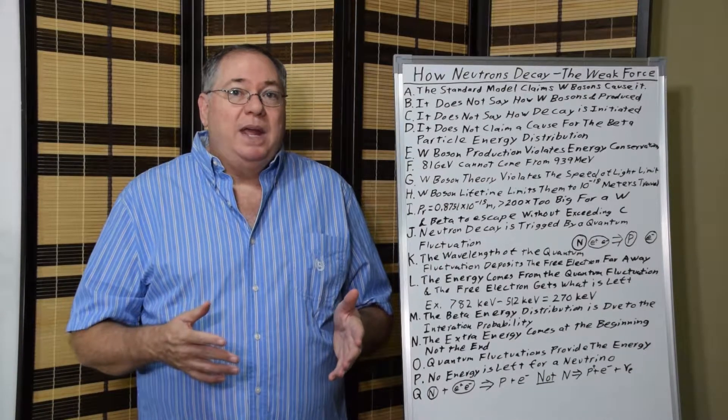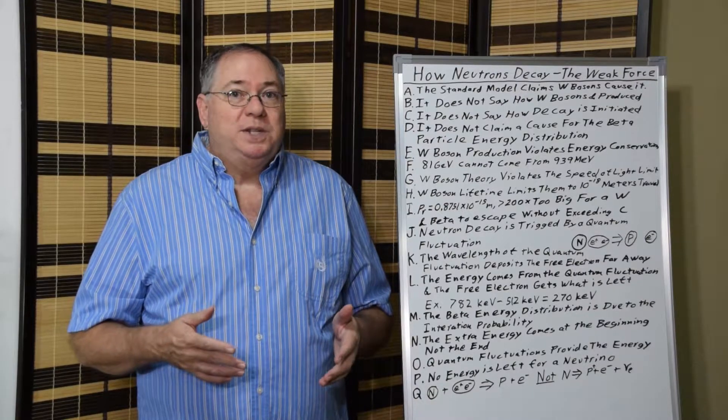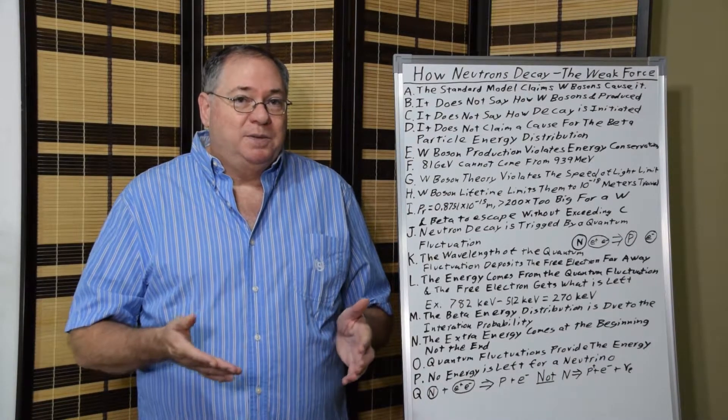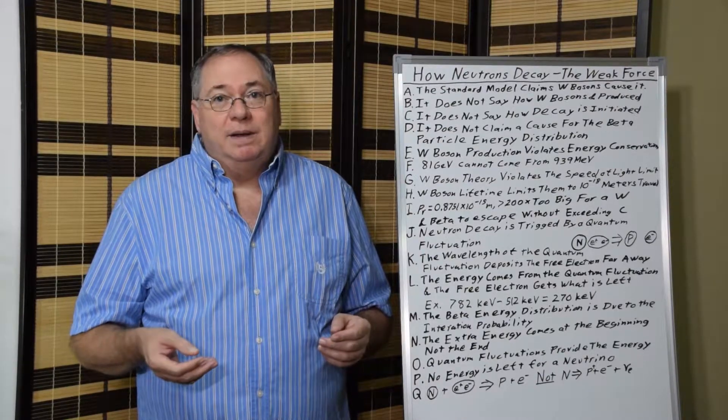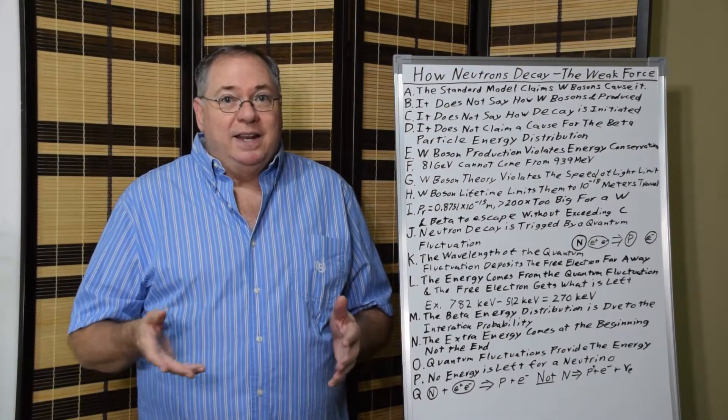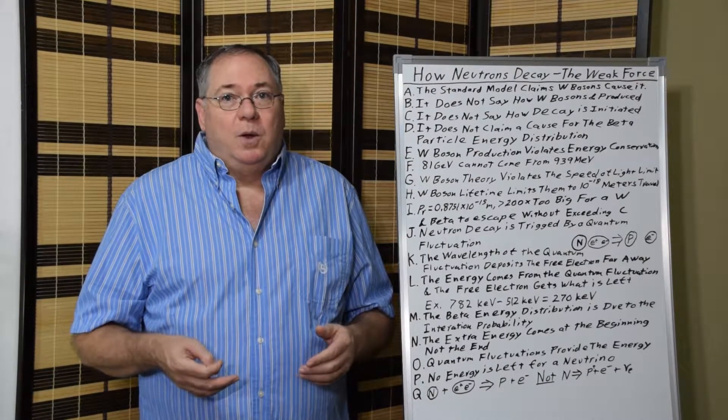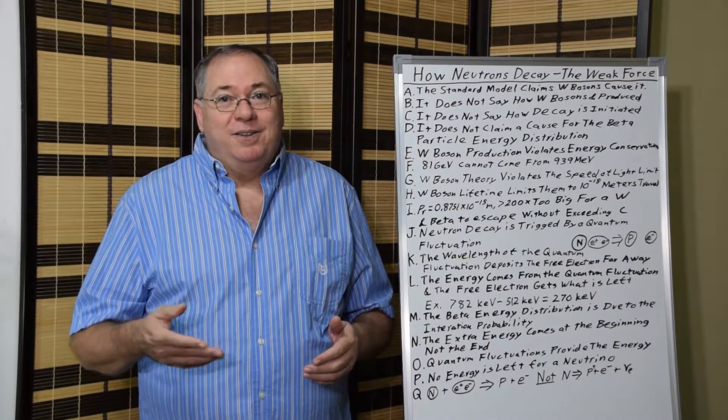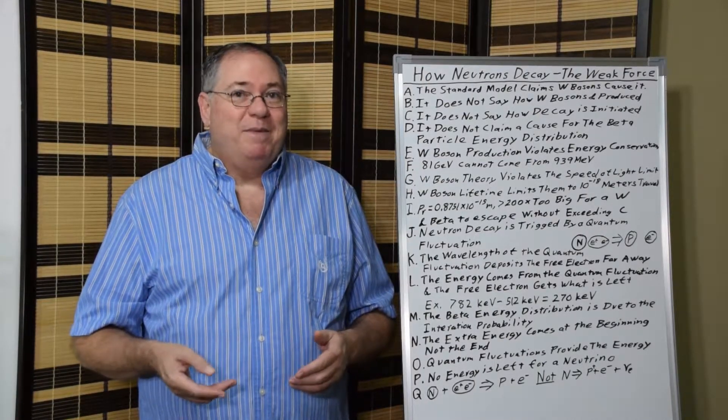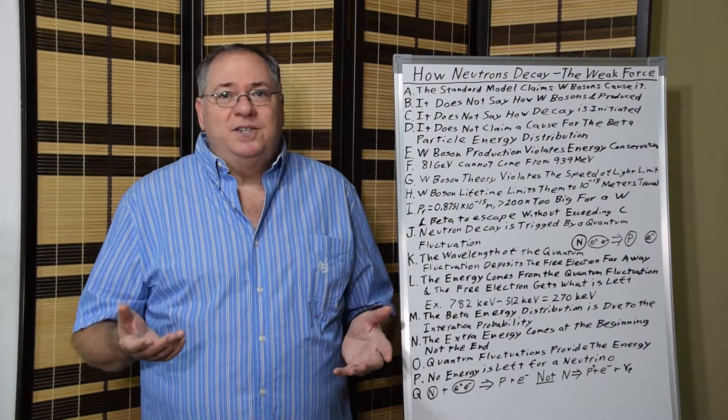And then we have the energy conservation problem. A W-boson, as it's been identified in experiments, has over 81 GeV, giga electron volts, per c squared of mass. While the neutron only has a little over 939 MeV of mass. So, where does this extra energy come from?